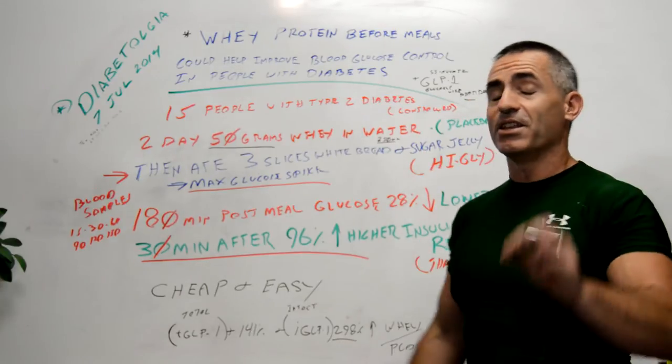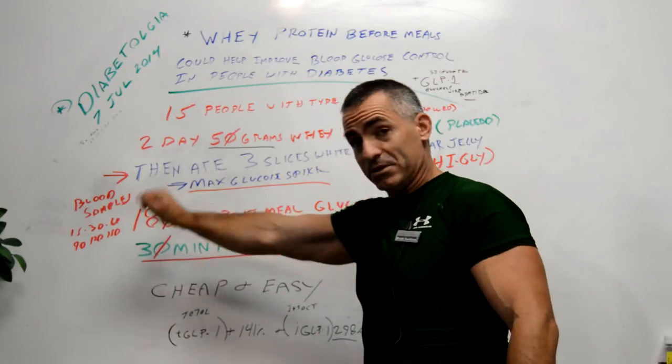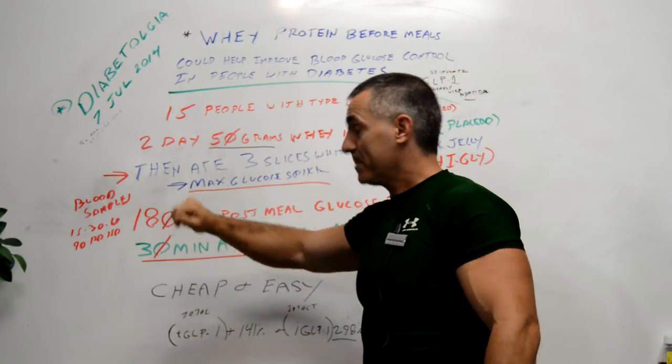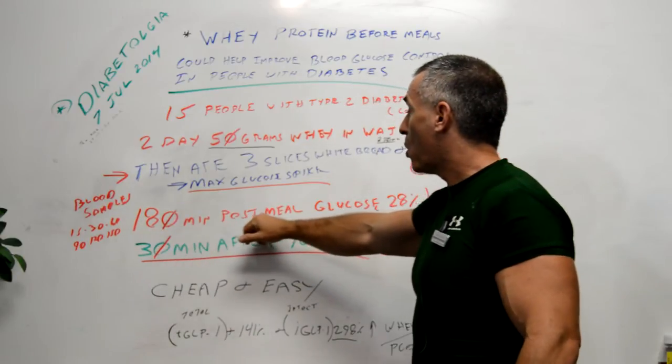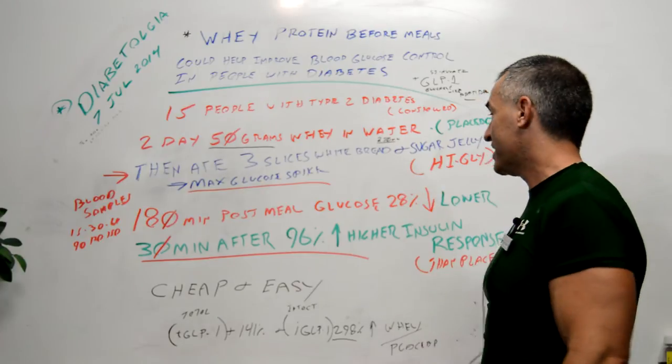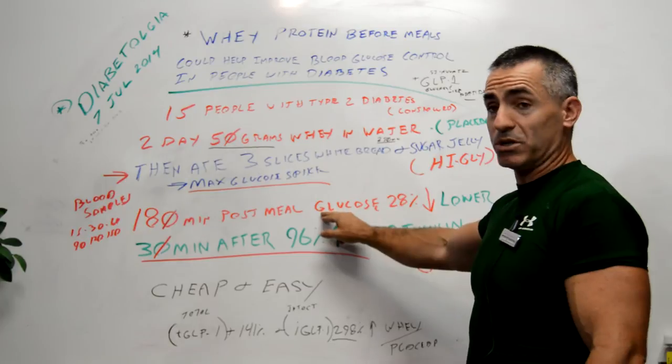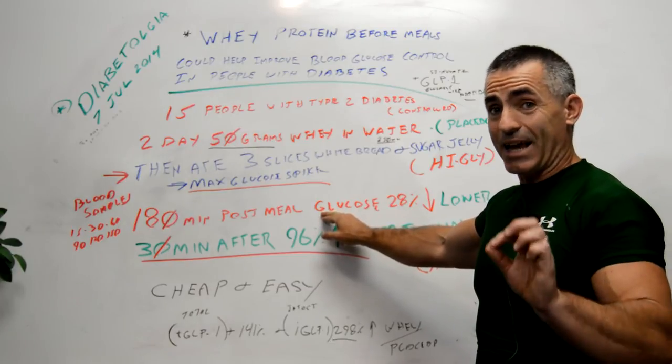The results in the whey protein group were this: they took blood samples—that's how they measured it. At 180 minutes post-meal glucose, the group that had the whey protein had 28% lower blood sugar, or I should say glucose levels, than those that had the placebo.